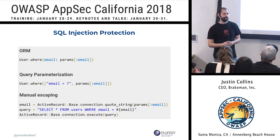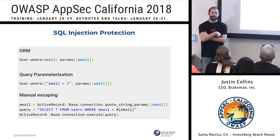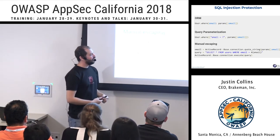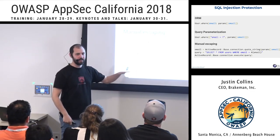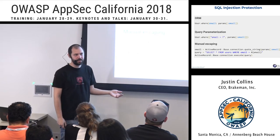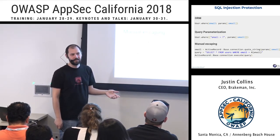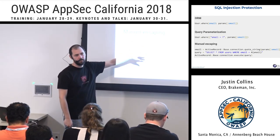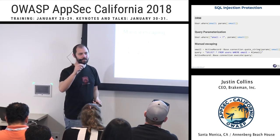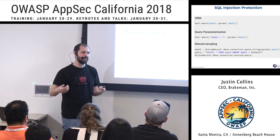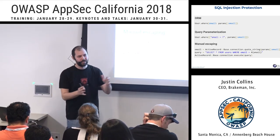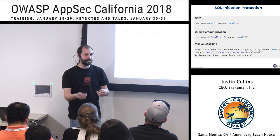Audience comment: issues at their company included people writing SQL functions inside Java code — not just SQL statements, but functions with statements that accepted parameters from the request. Not many developers or security folks knew you can create callable statements, so they had to create a wrapper to parameterize those. The speaker notes: stored procedures can also have dynamic bits — you look at the code and it seems okay, but in the database it accepts things dynamically.